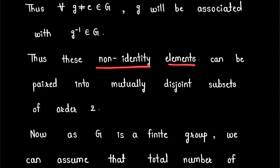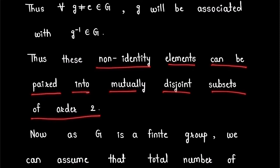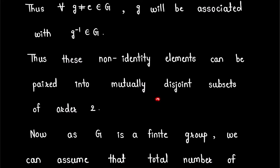These non-identity elements can be paired into mutually disjoint subsets of order 2. We can form subsets containing two elements: g and its inverse. All such subsets will be mutually disjoint, as every non-identity element g in G has a unique inverse in G.